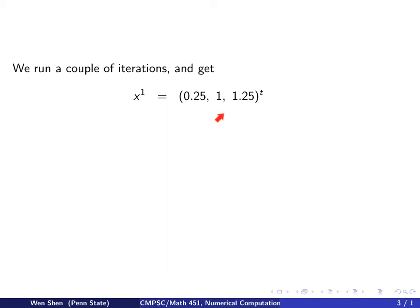And 1 more iteration, I get 0.5, 1.25, 1.5. And 1 more iteration, I get 0.625, 1.5, 1.625.